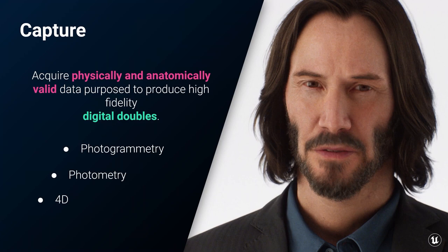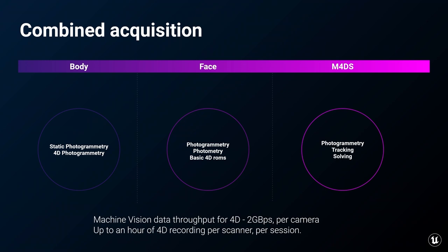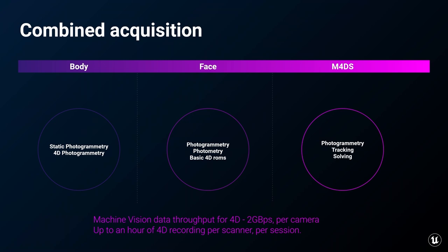Different scanners are built for different purposes. Epic 3Lateral currently has three types of specialized scanners deployed. The body scanner, with its wide framing and sheer number of cameras, captures full-body photogrammetric data, non-polarized diffuse textures, and 4D body motion. The sitting photometric/photogrammetric scanner provides all data used for face rig creation, as well as 4D data in the form of range-of-motion takes used for machine-learned rig purposes. The mobile 4D scanner, also known as the performance scanner, is easy to use, has a high rate of take ingestion, and provides the best comfort for talent. Currently, machine vision data throughput for the 4D is 2 GB per second per camera, and we can record up to an hour of 4D recording per scanner per session.